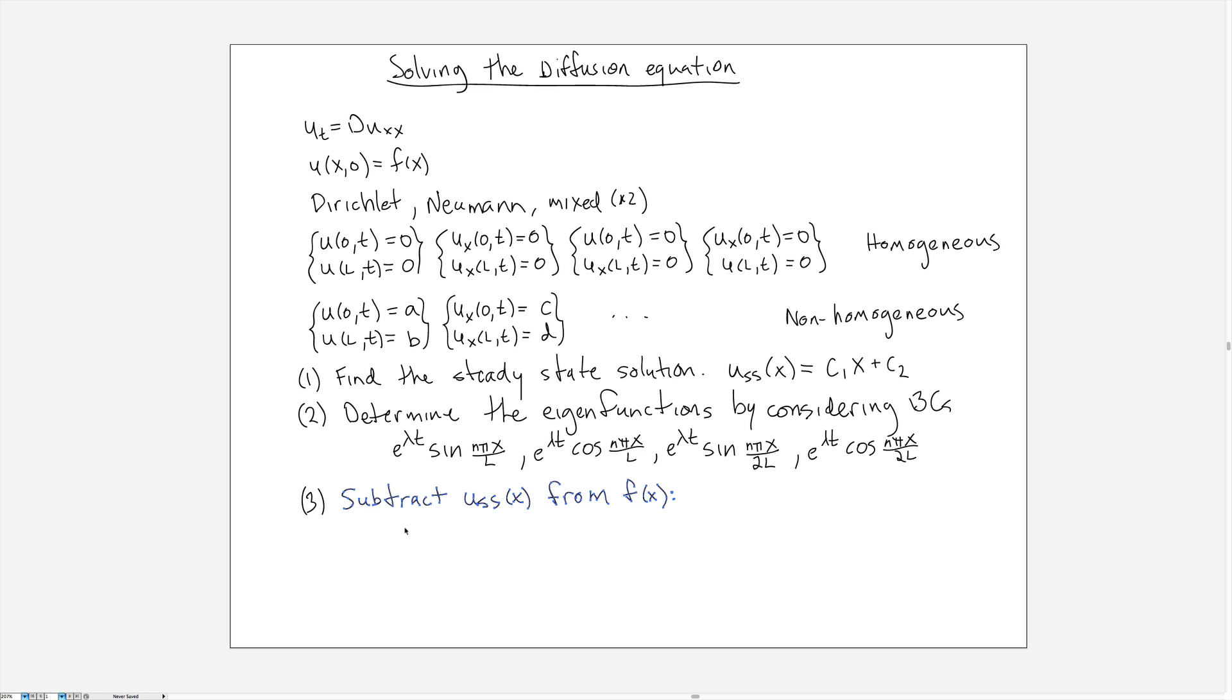So the third step is to subtract off the steady state from that initial condition. So when we subtract it off I'm going to give it a new name. G of X is this new function that I get by taking f of X minus the steady state. Once you've subtracted off the steady state to get this new function G of X,